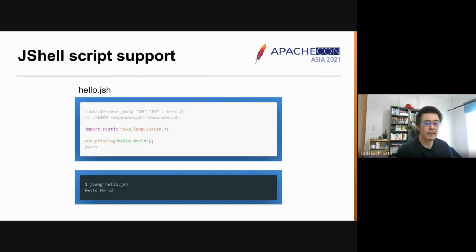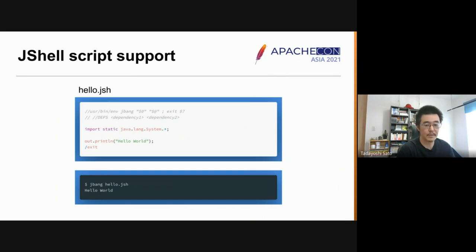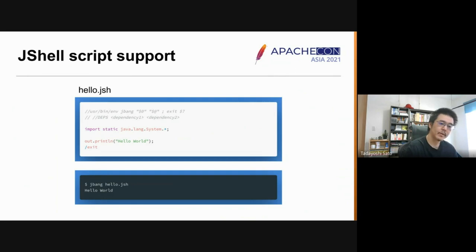You can write a script in Java syntax, but it may not look lightweight compared to scripting languages such as JavaScript or Python. My preference is the JShell script. JShell is an interactive console for Java, added since Java 9. By changing the script's extension to `.jsh`, you can write and run a script as a set of JShell instructions.